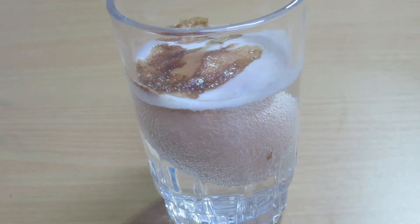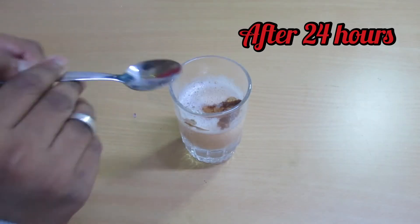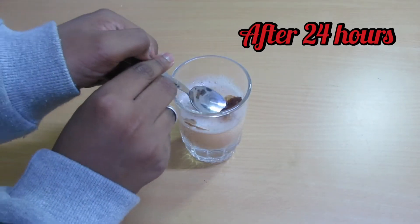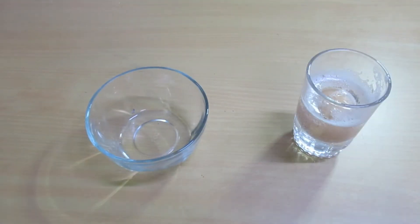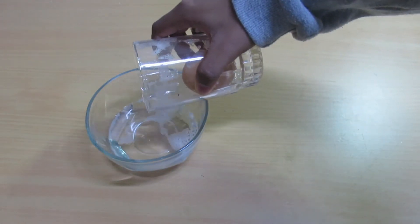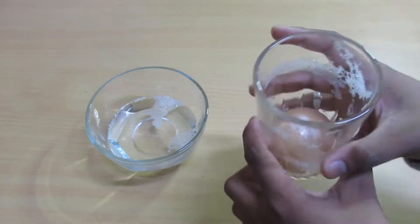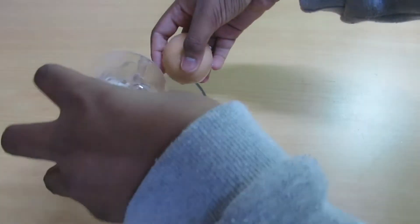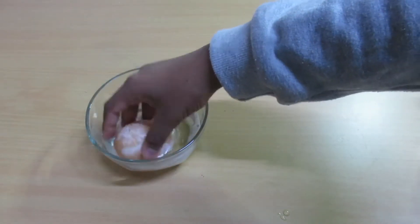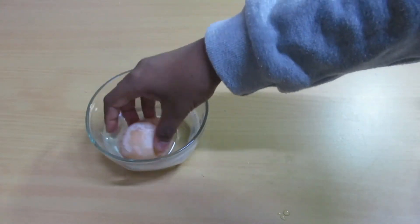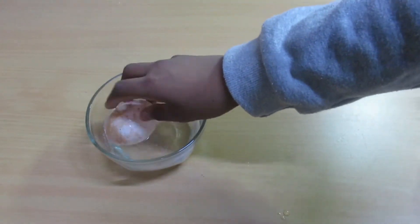The acid in the vinegar starts to react with the calcium carbonate eggshell and slowly dissolves it. Pour the vinegar into a bowl. You may need to rub off any remnants of the shell and wash it off in the vinegar.